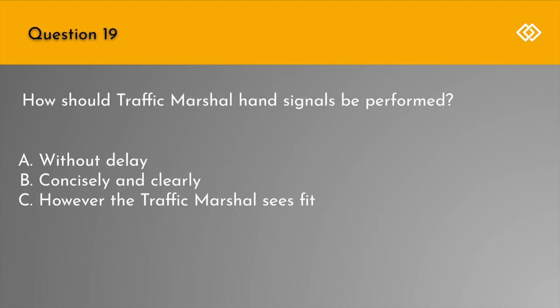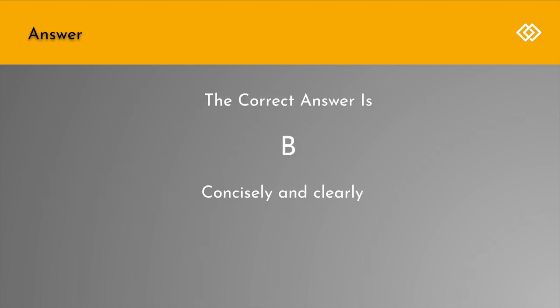Question 19. How should traffic marshal hand signals be performed? A. Without delay. B. Concisely and clearly. Or C. However the traffic marshal sees fit. The correct answer is B: Concisely and clearly.